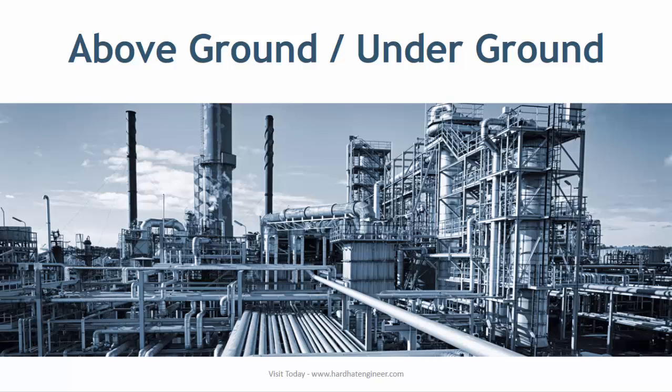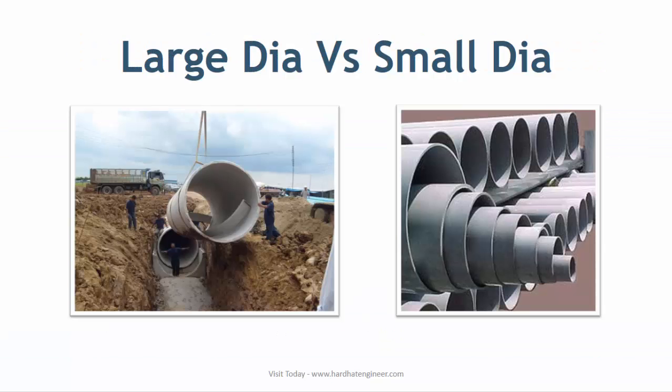Another difference between piping and pipeline is that pipelines are mostly large diameter and transport bulk liquid or gases from one place to other places, sometimes thousands of miles in distance. Whereas piping can be from half inch to 18 inch as per the plant design requirement, transferring fluid from one equipment to another within the plant boundary.